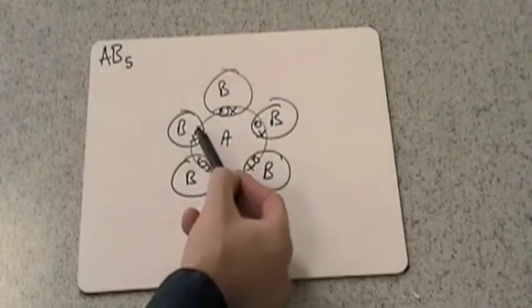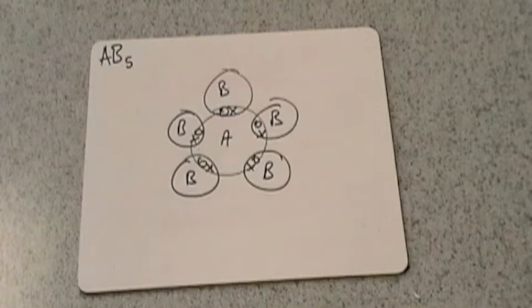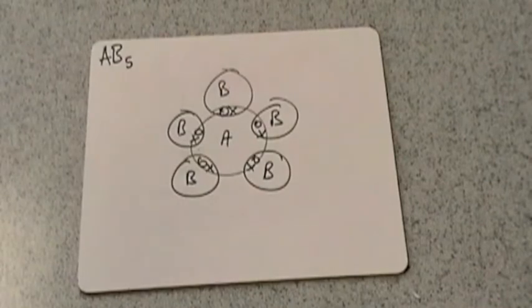One, two, three, four, five. These pairs of electrons are all going to repel each other because they're negatively charged. So what sort of a shape are we going to get with five pairs of electrons?